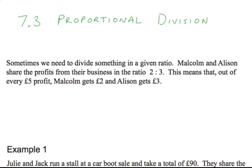7.3 Proportional Division. Sometimes we need to divide something in a given ratio. For example, Malcolm and Allison share the profits from their business in the ratio 2 to 3.